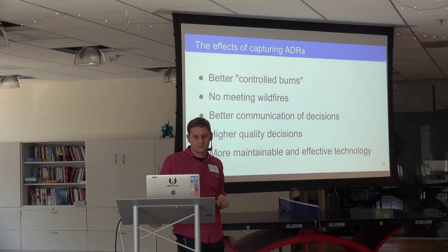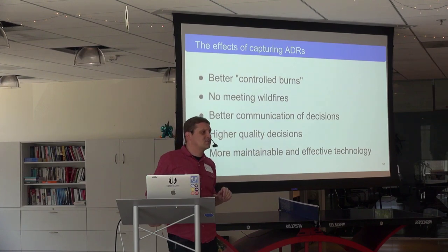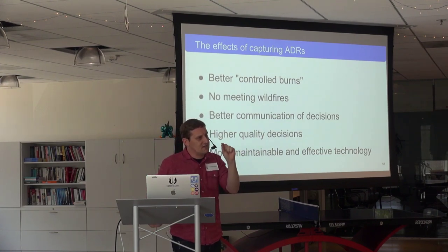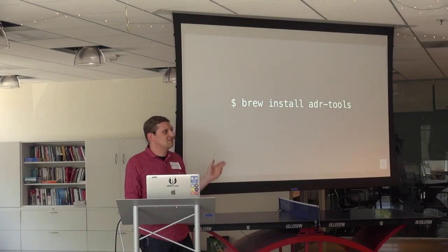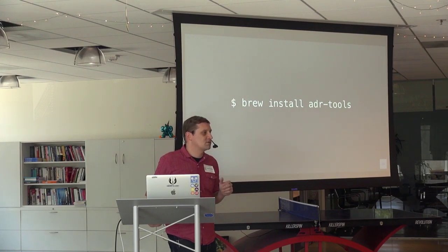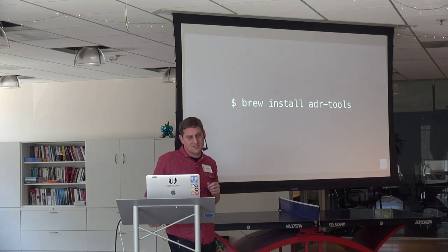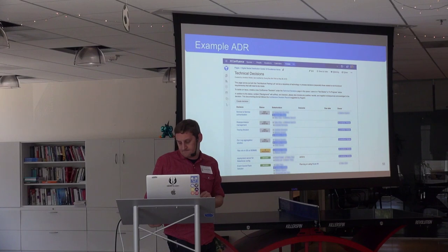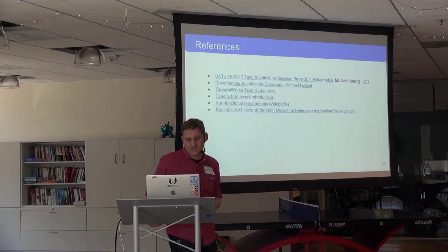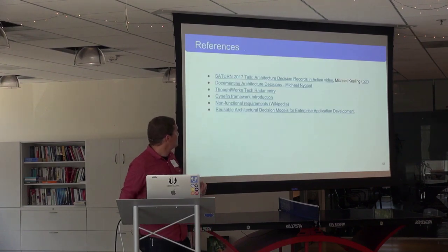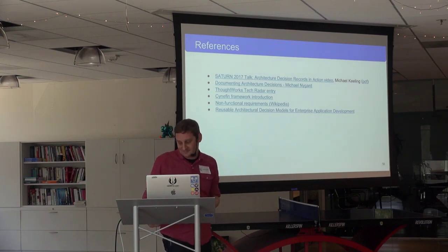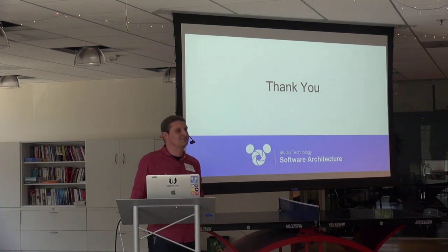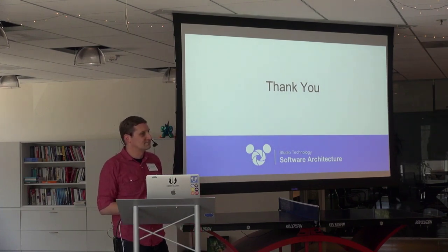If I could distill it down to one thing: try this. Just give it a shot on one project. Talk to maybe one or two other people and say, this might be worth a shot. If you're on a team already using a wiki, maybe use the Confluence decision features. Just try and capture ADRs and see what happens after a month or two. Here are all the places I went to pull ideas together — and that's that. Thank you for your time. Any questions?